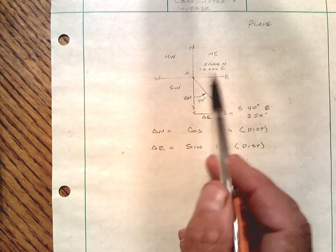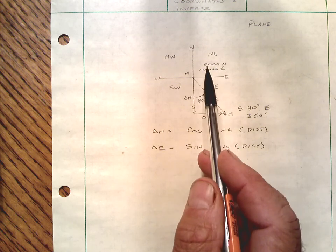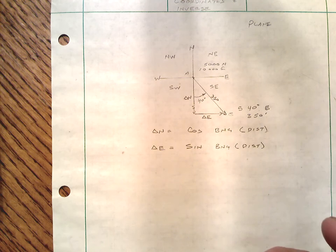Often we are using a coordinate system of just something generic like 5,000 north and 10,000 in the east and we would progress around and we'll try to do a little example of that.